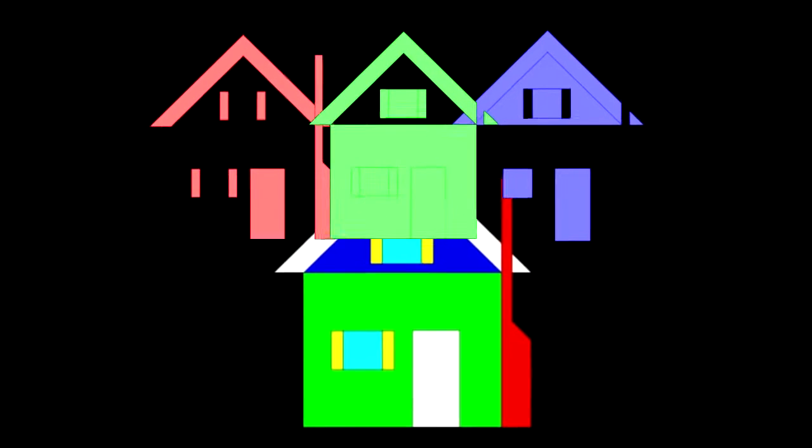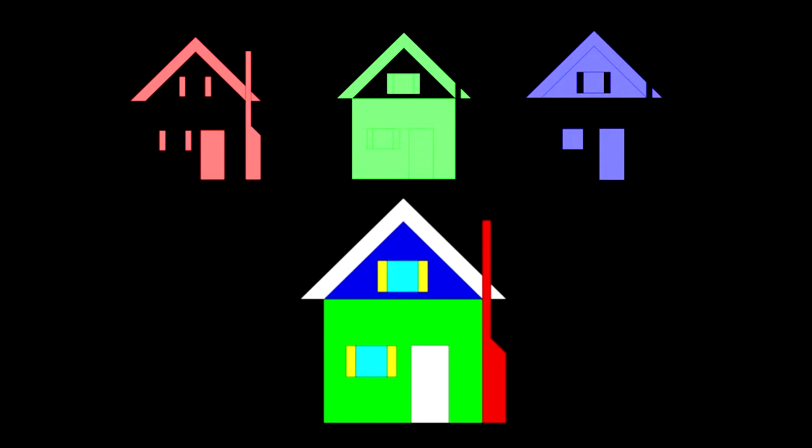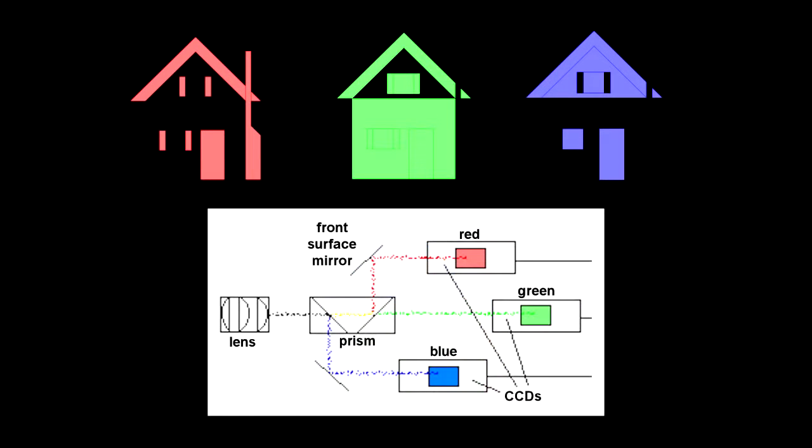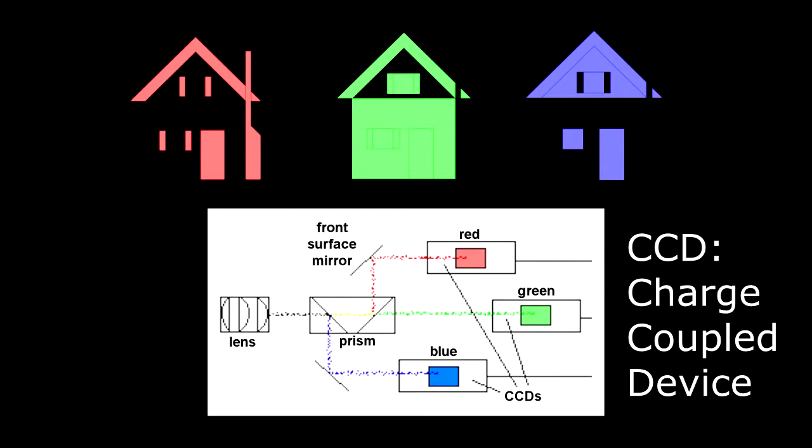Color television employs the basic principles of black and white television scanning. The essential difference is that a color picture is like three pictures in one. The three electrical signals that control the respective channels in the picture monitor are produced in the color television camera by three CCD or charge-coupled device integrated circuit chips.